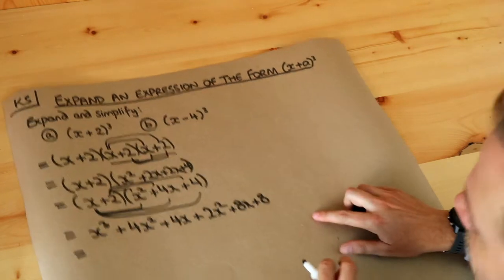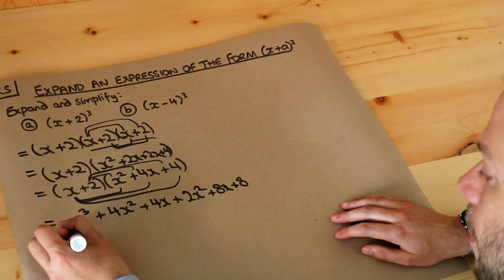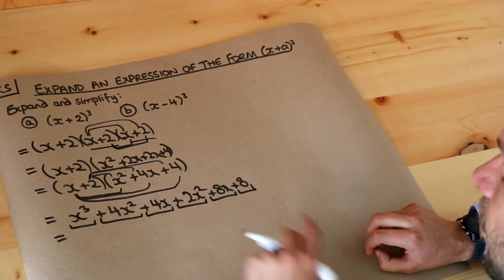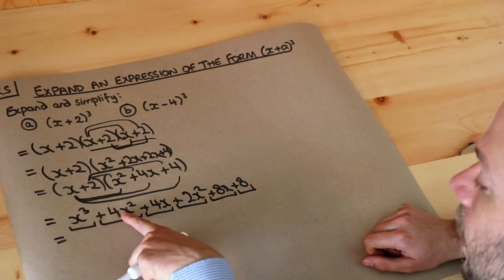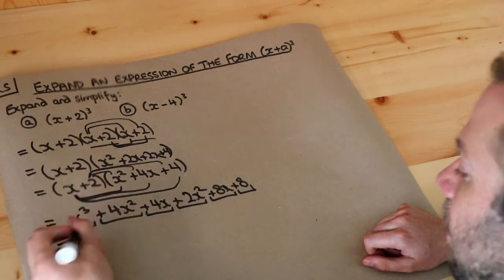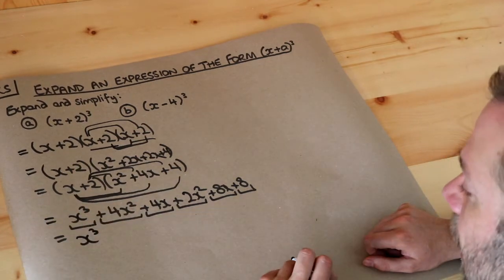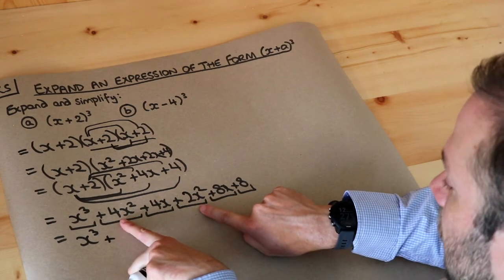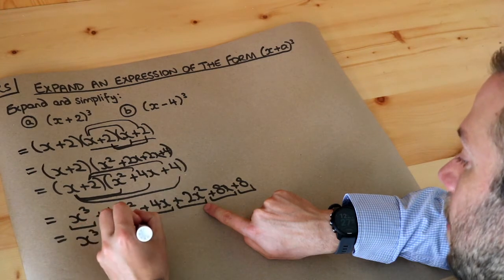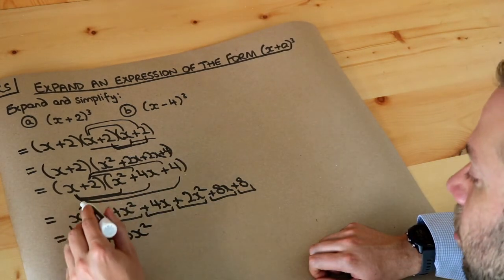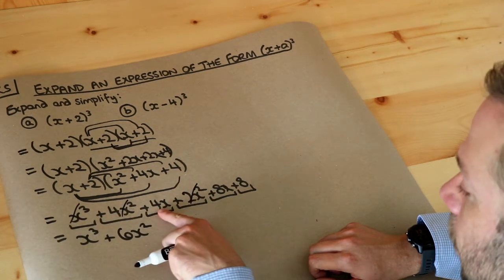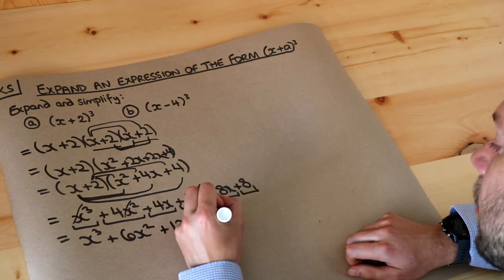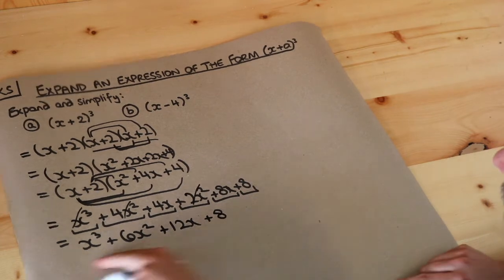Now we just collect like terms. The x cubed is the only x cubed term — it doesn't collect with anything else. For x squared terms: 4x squared plus 2x squared is 6x squared. For x terms: 4x plus 8x is 12x. And the constant term is plus 8. So the final answer is x cubed + 6x squared + 12x + 8. We can't simplify this any further.